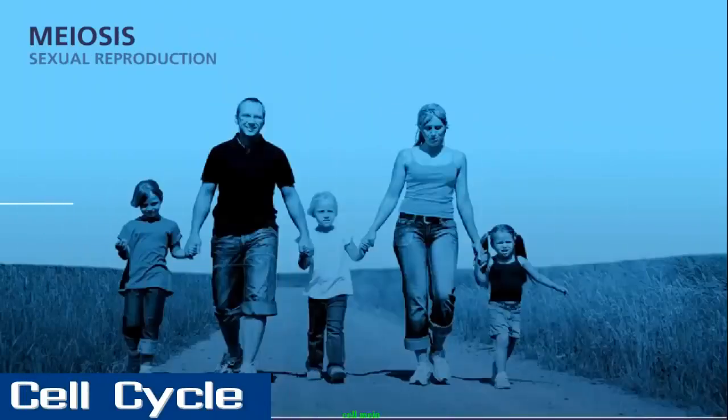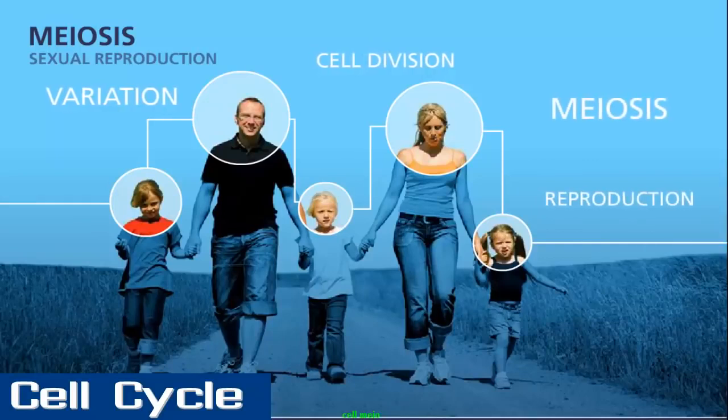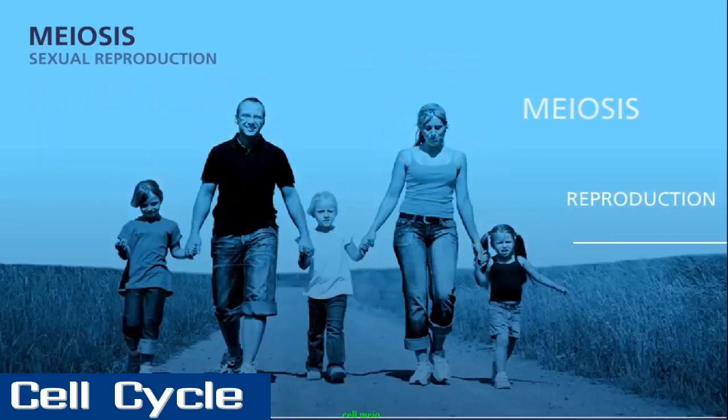Have you ever wondered why children do not look exactly like their parents, or why some siblings look so different from each other? The answer lies in the process of meiosis, which generates the gametes for reproduction.